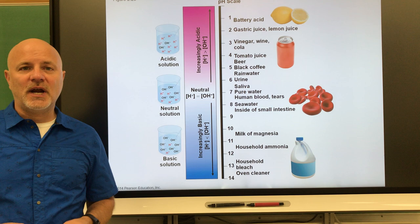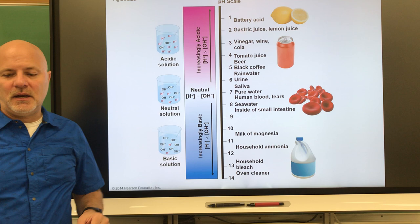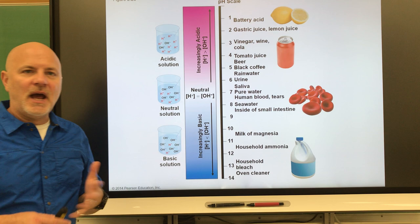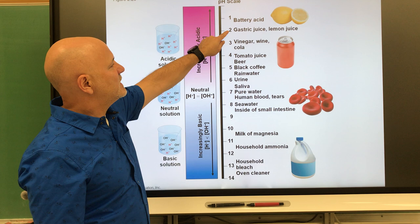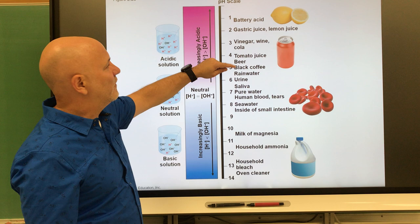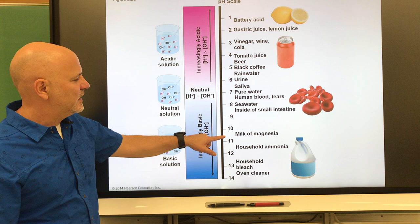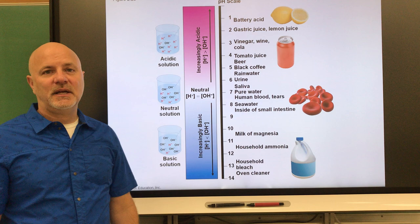The pH scale measures the hydrogen ion concentration of a solution. The scale goes from zero to 14; seven in the middle is neutral. Below seven is acidic, above seven is basic. These are based on orders of magnitude — the acidity of pH 2 is ten times more acidic than pH 3, and a hundred times more acidic than pH 4. Going the other direction, pH 12 is ten times more basic than pH 11, and pH 13 is a thousand times more basic than pH 10.